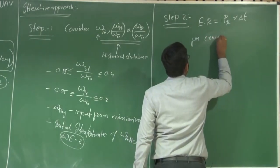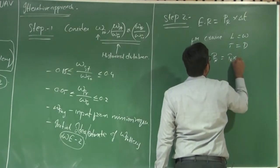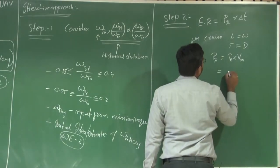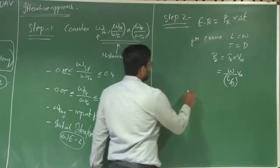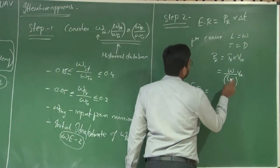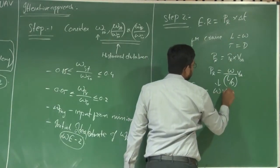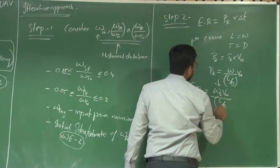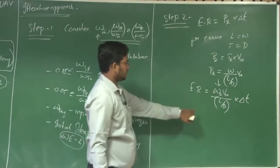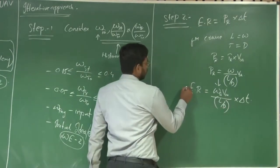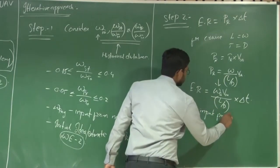How do you get the power required? For cruise, L equals W and T equals D. So power required is thrust required into velocity. What is thrust required? It is W divided by L/D, multiplied by velocity. Substituting this in the energy required equation: energy required equals total takeoff weight multiplied by V infinity into time of flight, divided by L/D. V infinity will be given as part of the mission requirements.